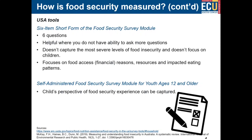There is also a child version — a self-administered food security survey module for children aged 12 years and above — where children can report their own experience of food security. They answer nine questions relating to their experiences, ranging from worry or anxiety down to actually running out of food.